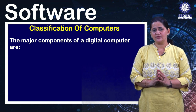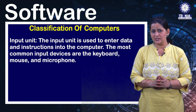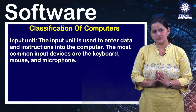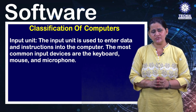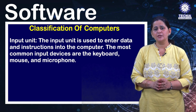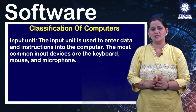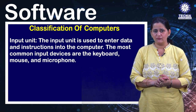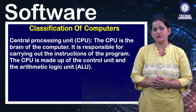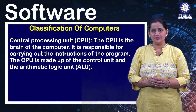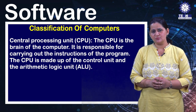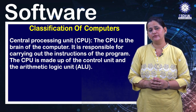Now, the major components of a digital computer. The first is the input unit, which is used to enter data and instructions into the computer. The most common input devices are the keyboard, mouse, and microphone. The second component is the central processing unit or CPU, which is the brain of the computer, responsible for carrying out the instructions of the program.